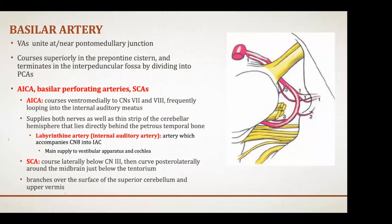The AICA supplies both cranial nerves seven and eight as well as a thin strip of the cerebellar hemisphere behind the petrous bone. The key branch off the AICA is the labyrinthine artery — the internal auditory artery — which accompanies cranial nerve eight into the internal auditory canal and supplies the vestibular apparatus and cochlea. The SCA is the next major basilar branch before the PCA, running right below the third nerve and coursing posterolaterally around the midbrain, just below the tentorium.